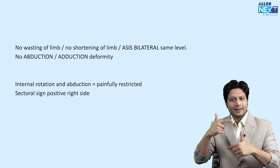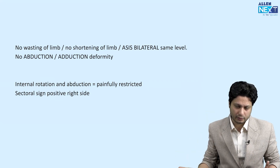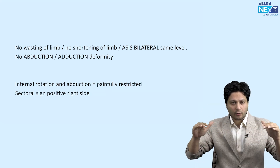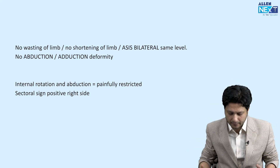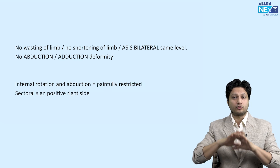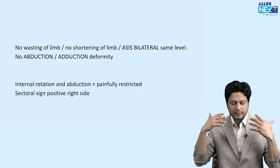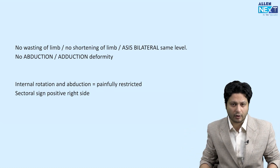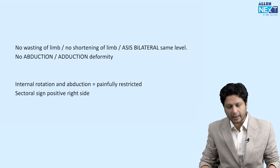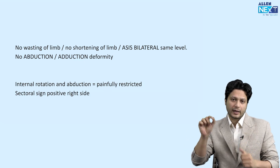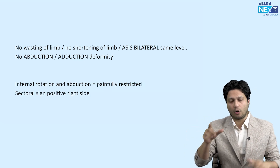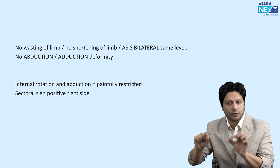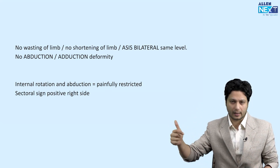This led us to examine the hip joint. The ASIS were equal — there was no discrepancy in level, no shortening of the limb, no wasting, and no abduction or adduction deformity. However, when we assessed movement of the hip joint, on the right side the internal rotation as well as abduction was found to be painfully restricted in comparison to the left lower limb.